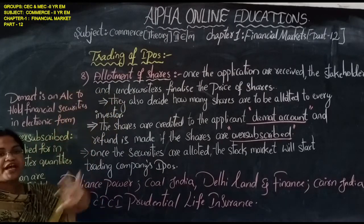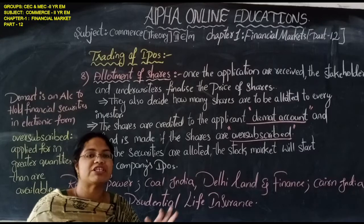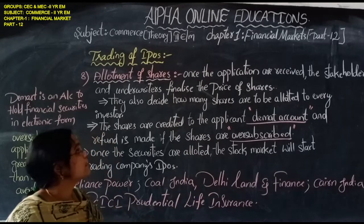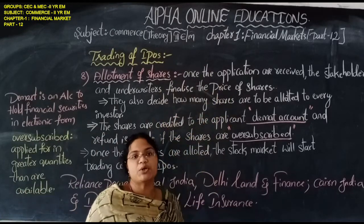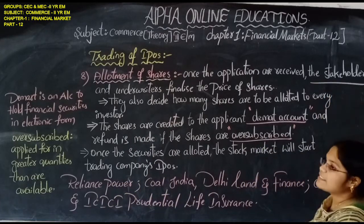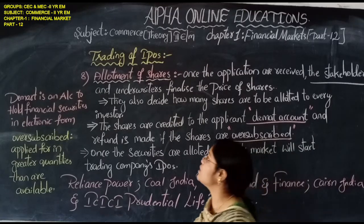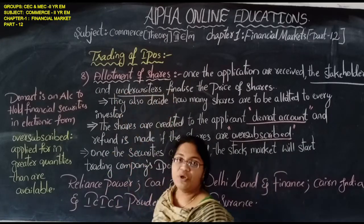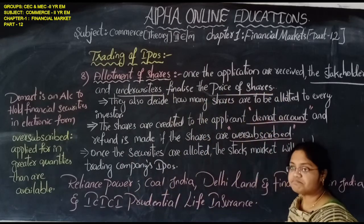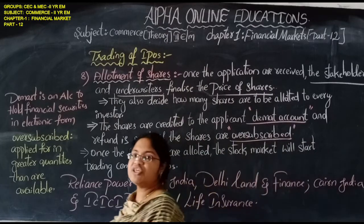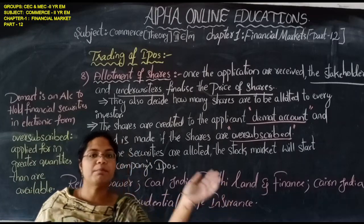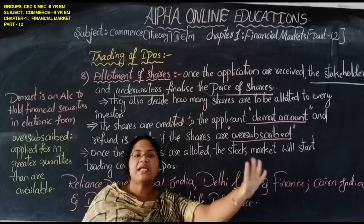Now is the time to allot the shares to the respective shareholders or stakeholders who are ready to take the shares. Once the applications are received from the stakeholders — shareholders and underwriters — the underwriters and brokers finalize the price of the shares. The price is finally fixed, whether through the fixed price system or the book building issue.